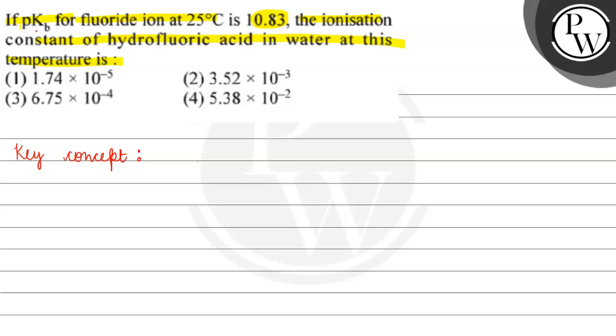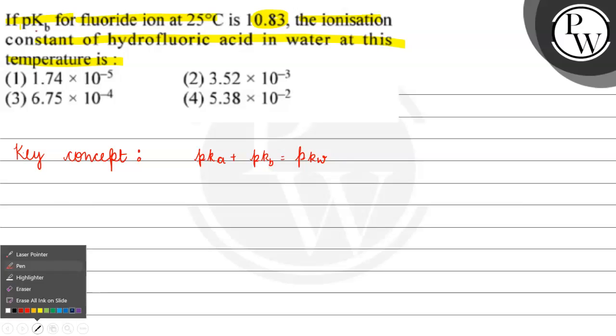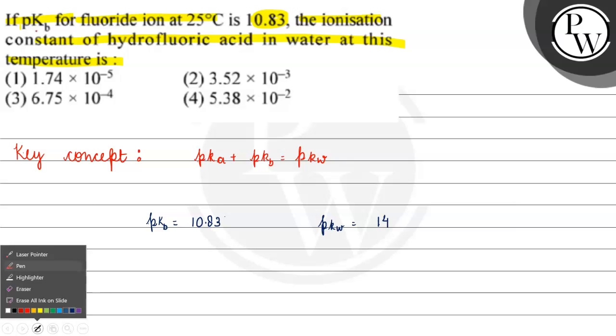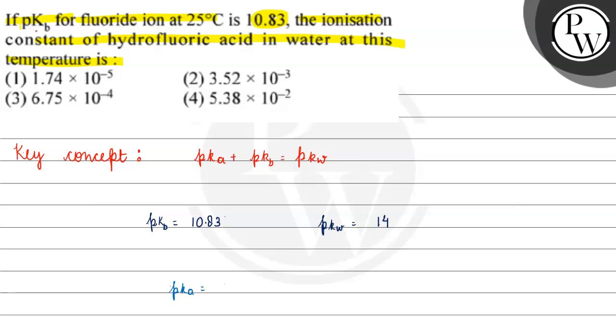The key concept for this question is, we have pKa plus pKb is basically equals to pKw. So, if we talk about pKb, how much is it? It is 10.83. pKw at 25 degrees Celsius is 14. So pKa will be equals to pKw which is 14 minus pKb, which is 10.83.